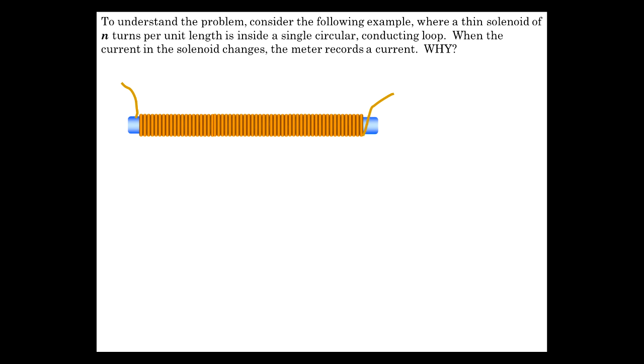So consider a long solenoid of n turns per length carrying current I, and it's a changing current. There's a di/dt that's not equal to zero. There's a single loop encircling this solenoid, area A, and we see a deflection in a current meter in that loop when there is a non-zero di/dt. Now, why is this the case? Consider first that the B field is going to the right. Validate that by wrapping that solenoid. Bring your fingers underneath and around in the direction of current, and your thumb points to the right.